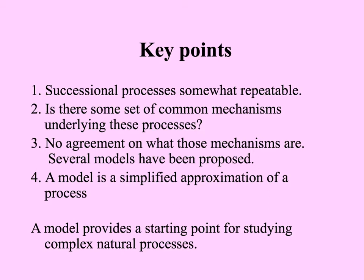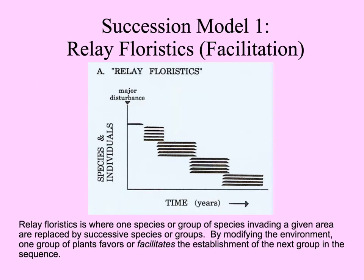What determines which species come in and become established, and then what determines when a species leaves? Succession has some important points to remember. The processes we see in succession are somewhat repeatable, which suggests there may be a common set of mechanisms that underlie them. However, there's not much agreement on what those mechanisms are. Some models have been proposed — a model being a simplified approximation of a process — and these provide starting points for studying natural processes that are pretty complex. One model is that of relay floristics, or facilitation, where one group of species comes into an area and transforms it so that it's more hospitable to the next group of species.